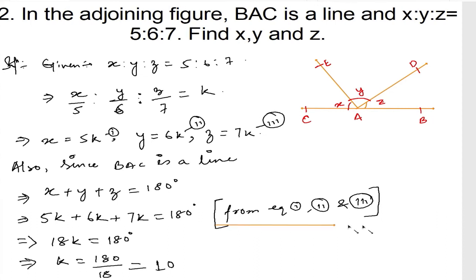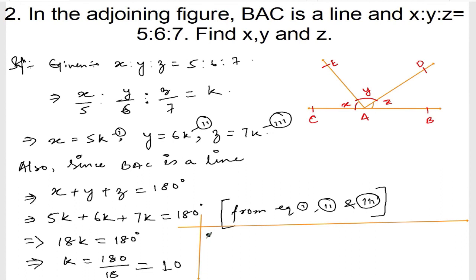Let me write down the final answer. Therefore X is equal to 5k, which is 5 into 10, equals 50 degrees. Y is equal to 6k, which is 6 into 10, equals 60 degrees. And Z is equal to 7k, which is 7 into 10, equals 70 degrees. X, Y, and Z are 50, 60, and 70 degrees. That's all. I hope the answer is correct. Thank you so much. We will meet in the next video.